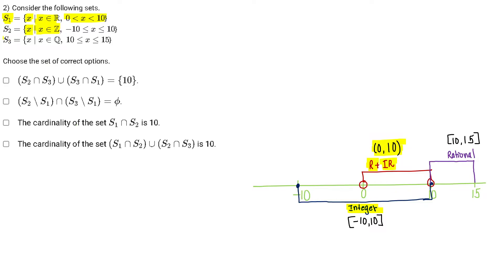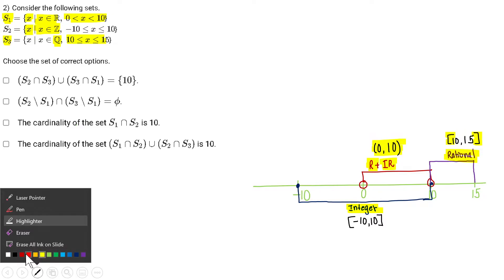Now let's talk about S3. S3 involves only rational numbers, and that too between 10 to 15, where 10 and 15 are both included — a closed interval. Now let's solve the options and figure out which one is correct.